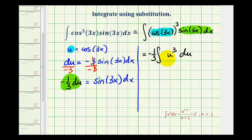And now, we'll determine the anti-derivative of u to the third with respect to u. So, I'll have negative 1/3 times u to the 4th divided by 4 plus c.